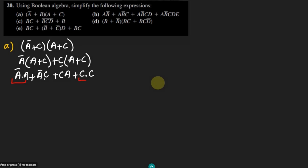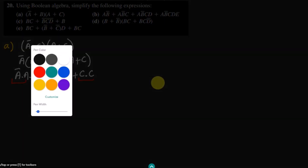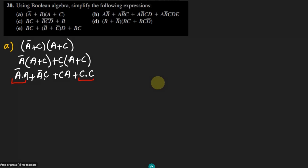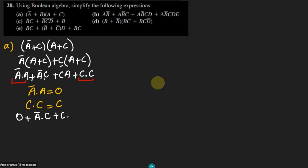Now we can see that according to Boolean algebra, a dot a' is always equal to 0, and similarly C dot C is always equal to C. Using these relationships inside our expression, we get 0 plus a' dot C, similarly C dot a, and here C dot C becomes C.